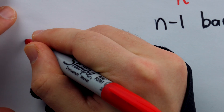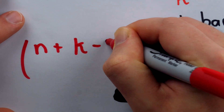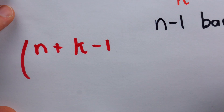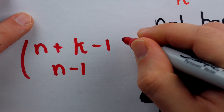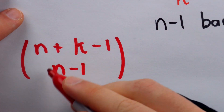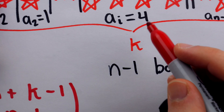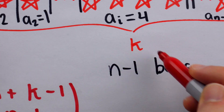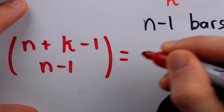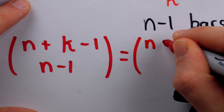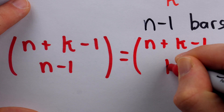The number of non-negative integer solutions to this equation is simply the number of ways we can choose to place the n−1 bars in this sequence of k + n − 1 positions. This equals n + k − 1 choose n − 1. Equivalently, we could choose where to place the k stars instead of the bars, which gives the same number: n + k − 1 choose k.